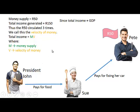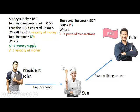We also know that total income is equal to GDP, and we can say that GDP is equal to PY, where P is the price of transactions and Y is the quantity of transactions.